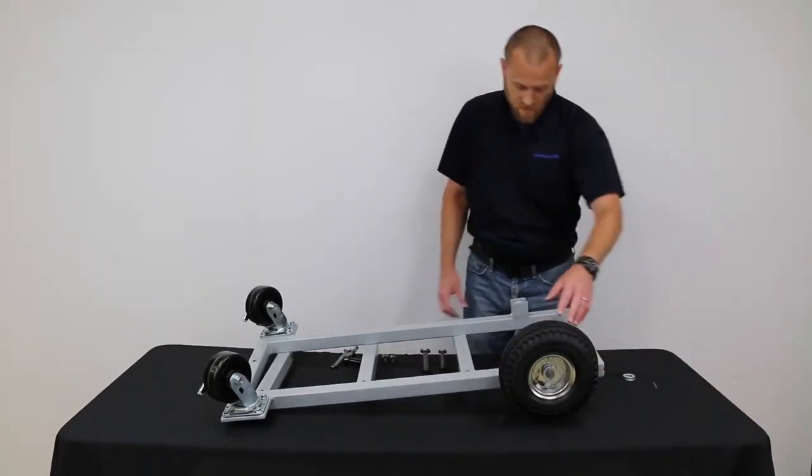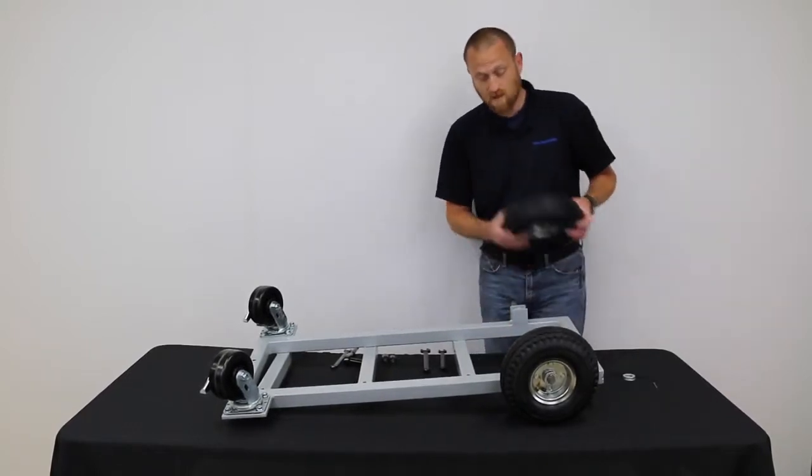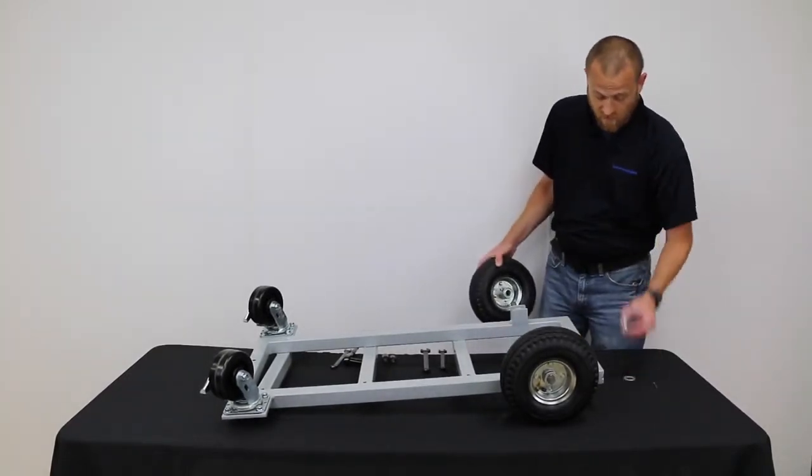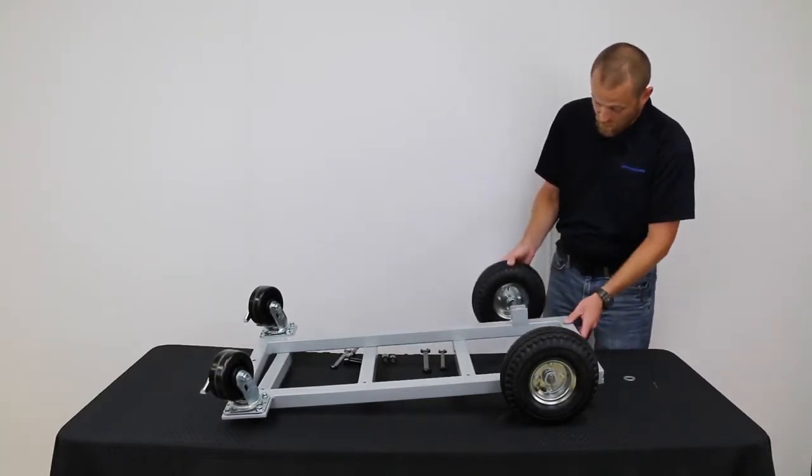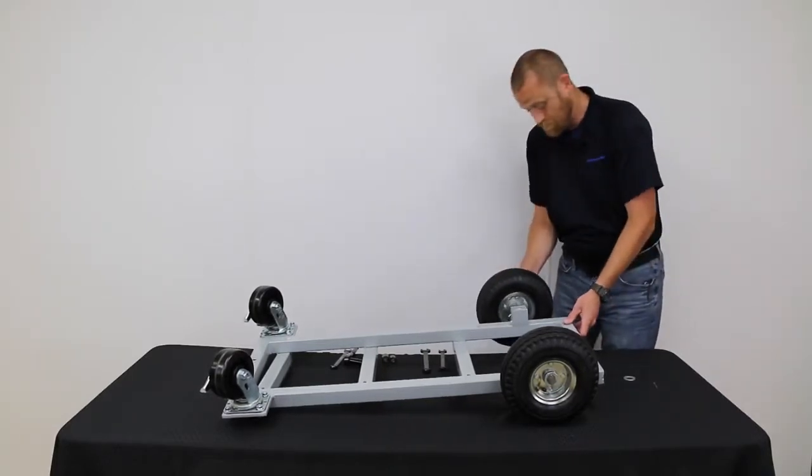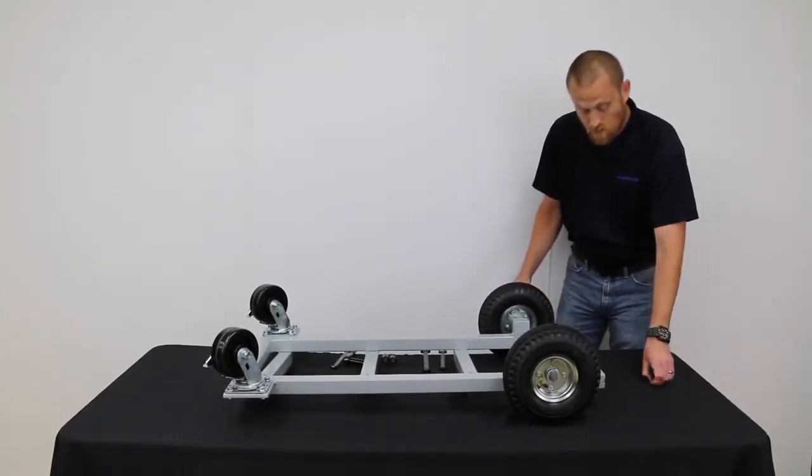After you have one tire on, you can take the remaining tire out from underneath the base and it'll leave you with enough room to get the next tire onto the next axle. Once again, two washers, longer side of the hub in, remaining washer, and cotter pin.